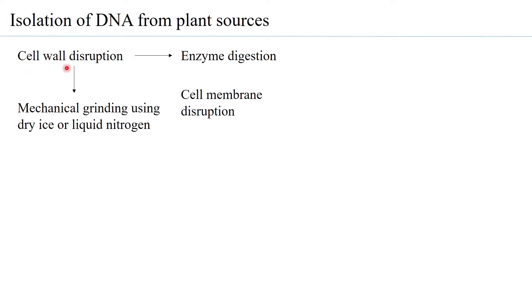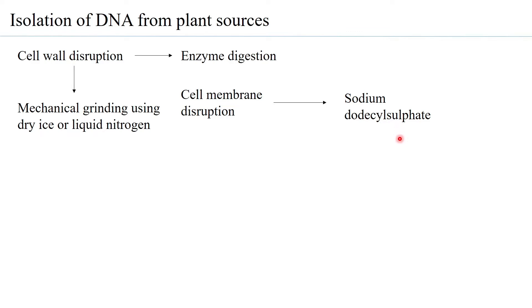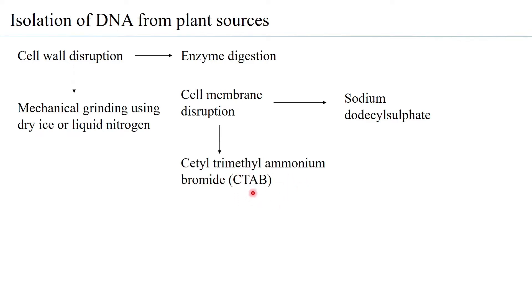After cell wall disruption, one proceeds to cell membrane disruption. This can be carried out using sodium dodecyl sulfate (SDS), an anionic detergent that removes lipids from the bilipid membrane, ensuring cell lysis. For plant systems, cetyl trimethyl ammonium bromide, commonly called CTAB, is also used, and the method is known as the CTAB method.